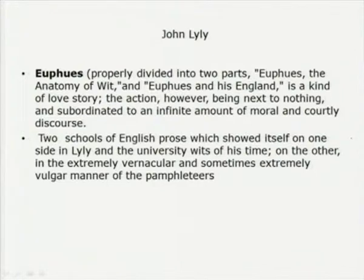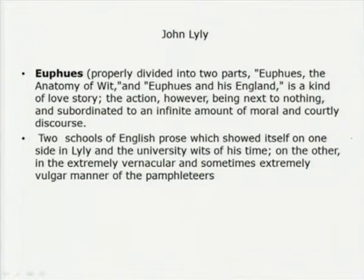John Lyly has to be mentioned here, not only as a dramatist but as a prose writer — especially his Euphues, divided into two parts: Euphues: The Anatomy of Wit, and Euphues and His England, a kind of love story. Yet the action is next to nothing; an infinite amount of moral and courtly discourse is given. Two schools of English prose showed themselves: on one side, Lyly and the University Wits of his time; on the other, the extremely vernacular and sometimes extremely vulgar manner of the pamphleteers.